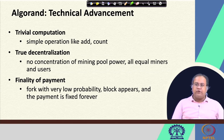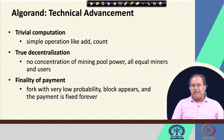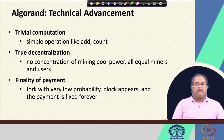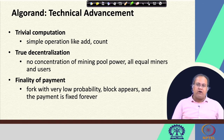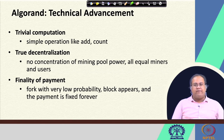Algorand uses the idea of true decentralization — it does not have any concentration of mining pool power; all users are equal and everyone is treated equally. You just need to hold a certain amount of money to prove that you are well equipped with the system so that you can honestly participate in the consensus mechanism. One important aspect of Algorand is that it ensures the finality of payment — unlike Bitcoin, the probability of a fork in Algorand is very, very low.